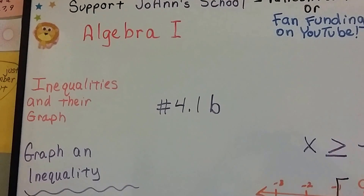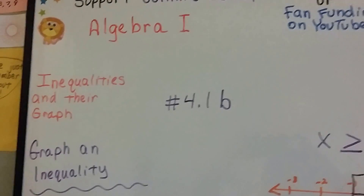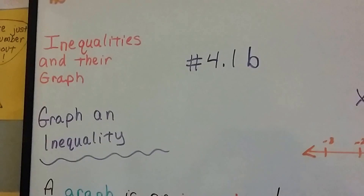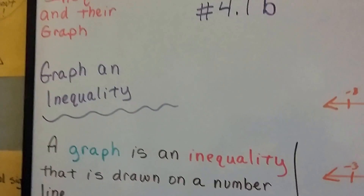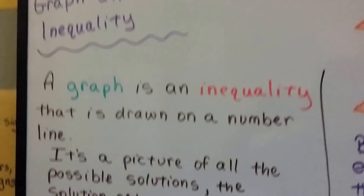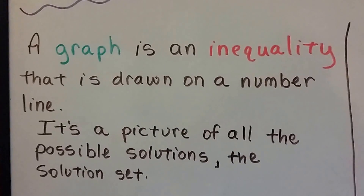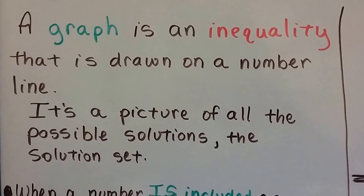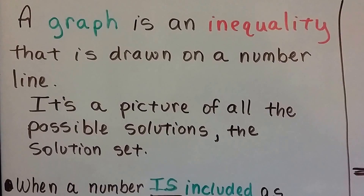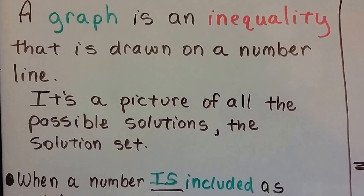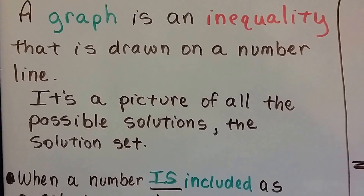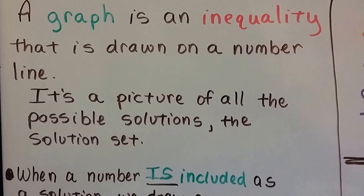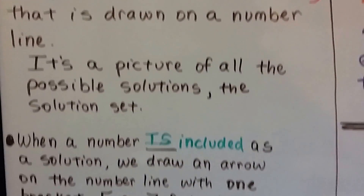Algebra 1, number 4.1b. We're talking about inequalities and their graphs, and we're going to graph an inequality. A graph of an inequality is drawn on a number line — it's a picture of all the possible solutions, the solution set.